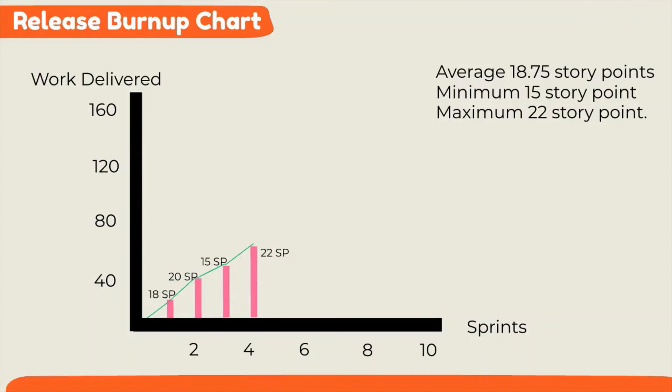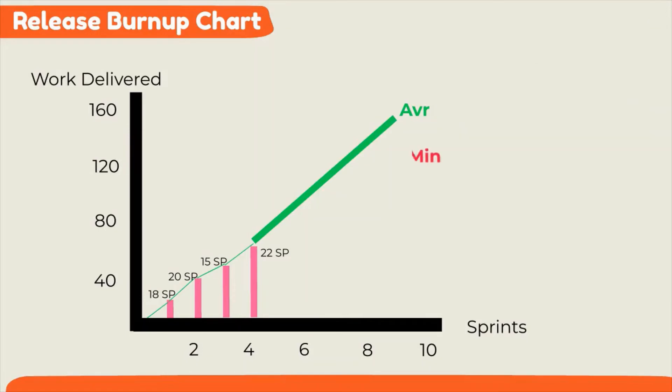Based on this, the product owner can draw the predictive line if the team always delivers on average, another line if they always deliver the minimum, and a last line if they always deliver the maximum.